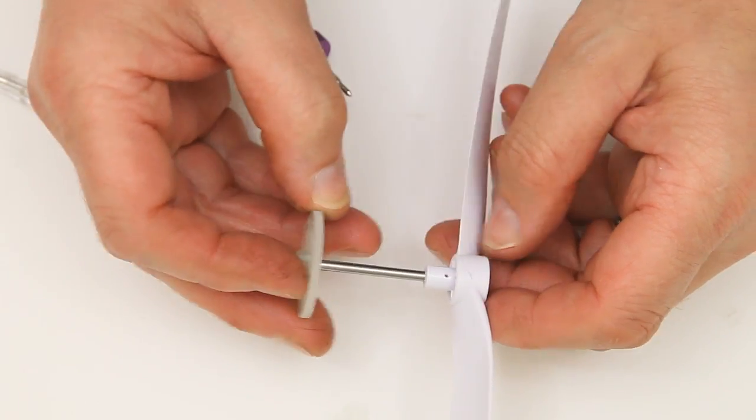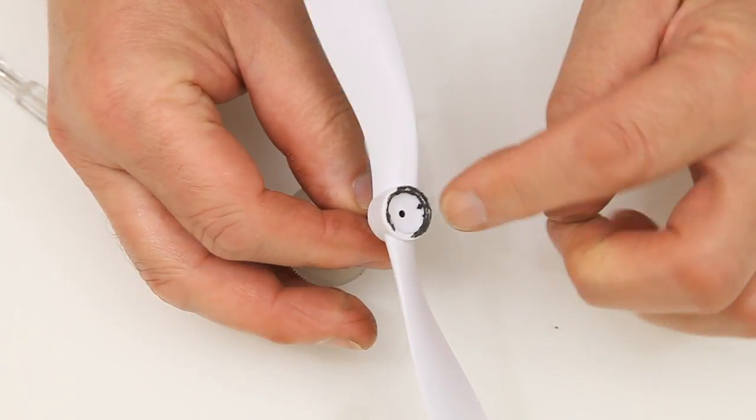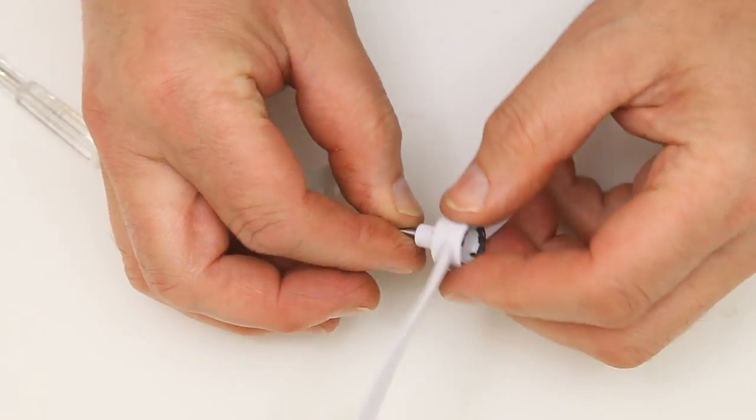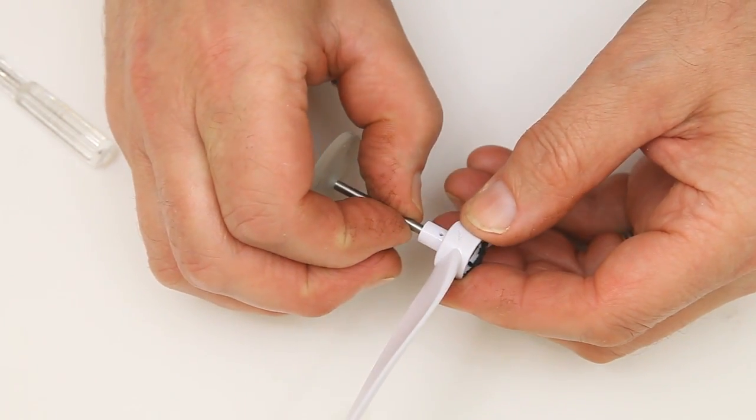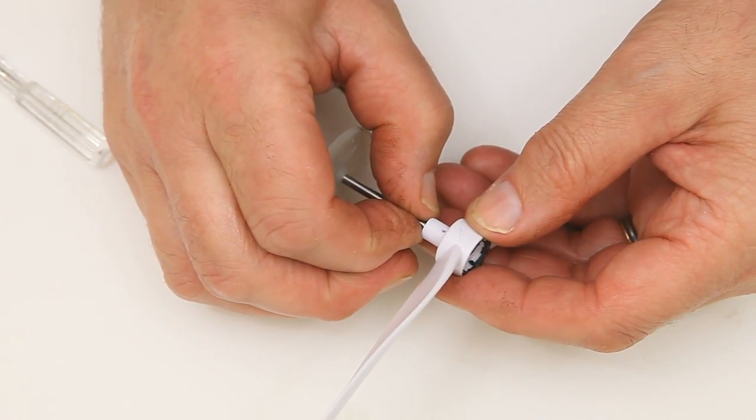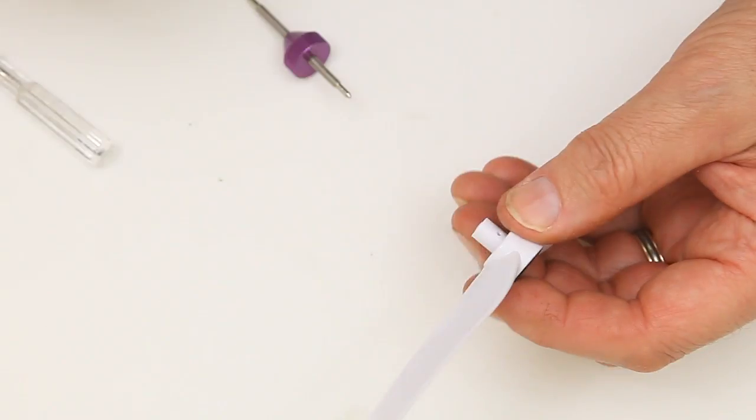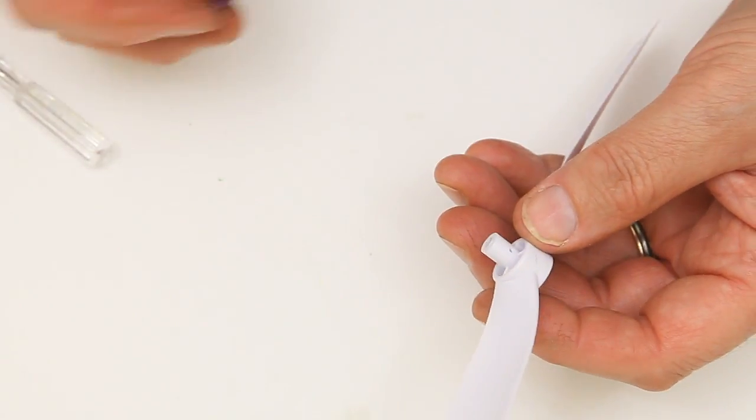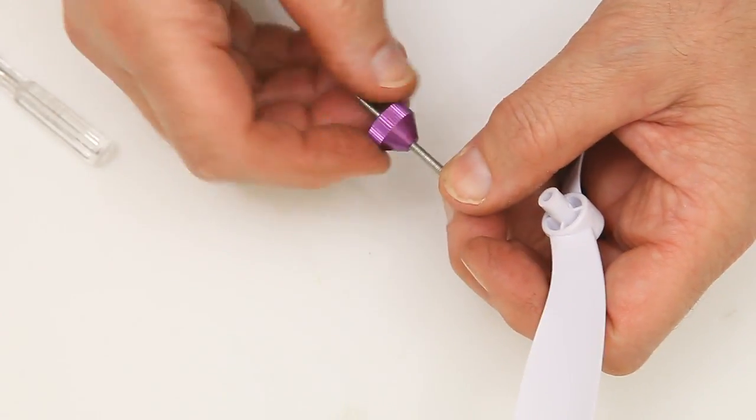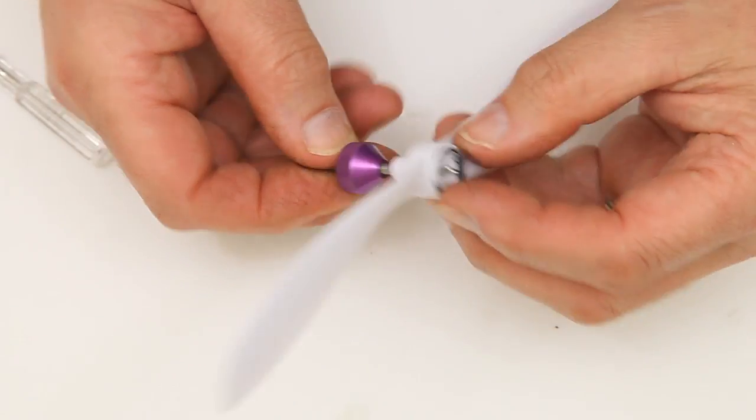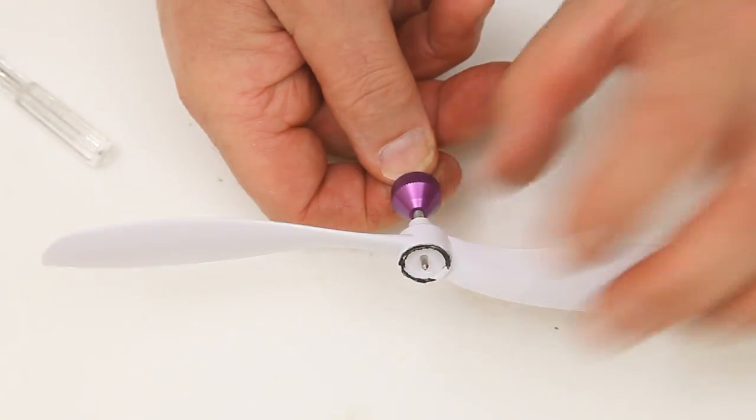The way the cog works is it goes in and then hits a shoulder inside that stops it going any further, and then the holes line up. So if I do have to drill something, we'll get around it somehow. And there we go, oh no, it goes right the way through, so we should be okay.